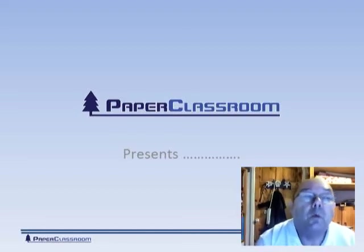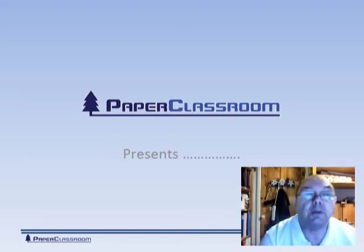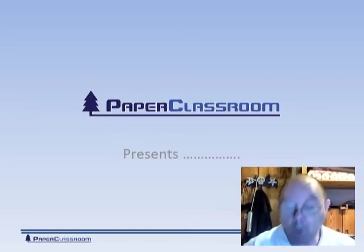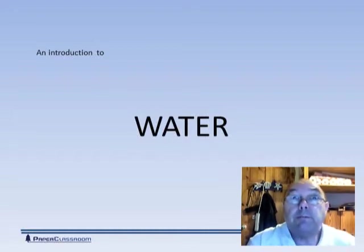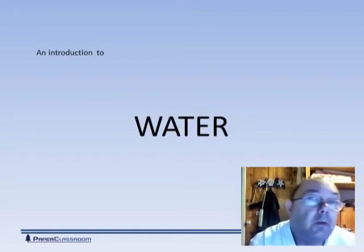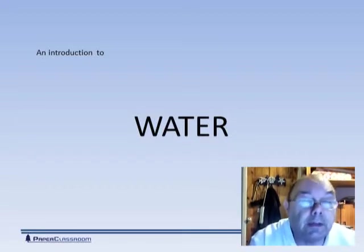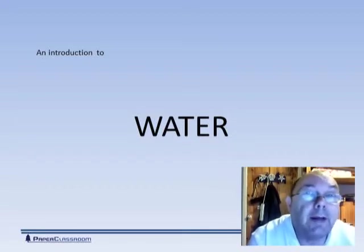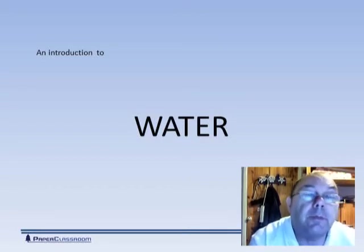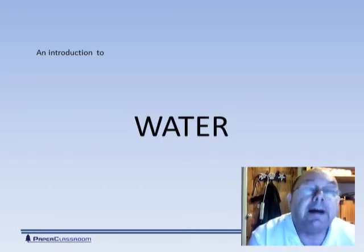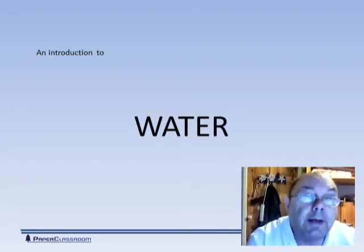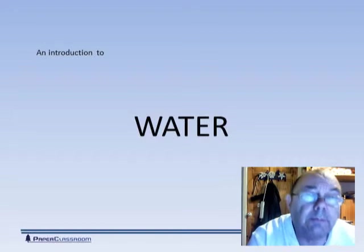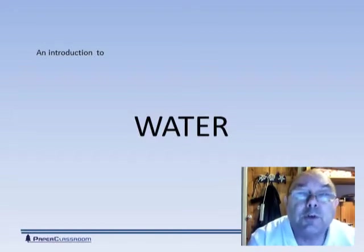Welcome to Papercraftsroom's Introduction to Papermaking module on water. Why do we need water? We need to disperse the fibres, we need to disperse and dissolve chemicals used in the mill, we need to transport fibres all through the pipework of the mill, and finally we need water to squirt out the fibres onto the moving wire to give us our sheet of paper. From there on in it's all about removing water, but in this module we're just going to talk about water itself.